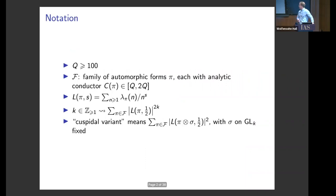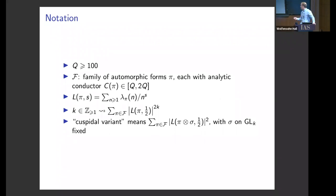We'll be talking today about moments of L functions and bounds, emphasizing the large degree case. Q will be some large number thought of as going off to infinity. F will always be a family of automorphic forms where all of the analytic conductors are roughly of size Q. We'll write L(π, s) for the L function.